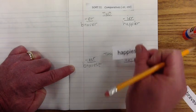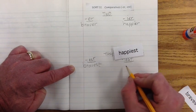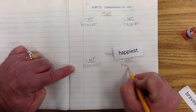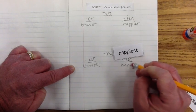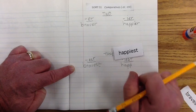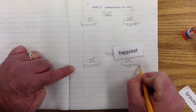And here we have happiest. So, I'm going to write H-A-P-P. And again, base word is Y, but we're going to drop the Y and add I-E-S-T.